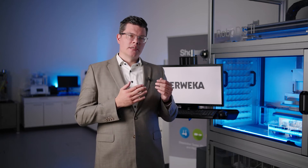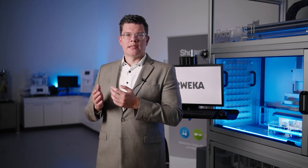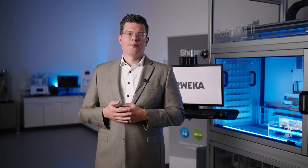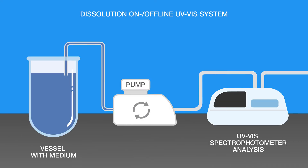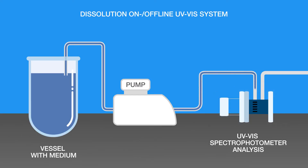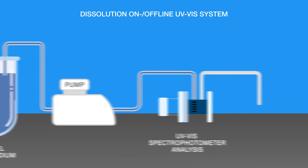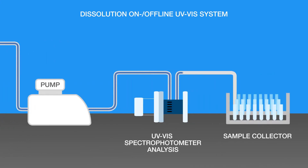The third category is an on-offline system which combines both systems. Some portion of the sample is stored, while another portion is directly analyzed. Depending on the type of on-offline system, the sequence can be different. In an on-offline UV-Vis system, the sample is first analyzed in a spectrophotometer and then afterwards stored in a vial using a sample collector.